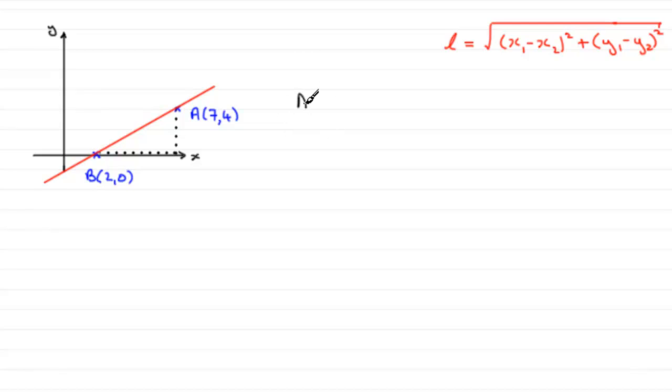But, if we start this off, we've got AB then equals the square root of the difference between the x-coordinates. I'm going to do 7 minus 2, all squared, plus the difference between the y-coordinates, 4 minus 0, all squared.